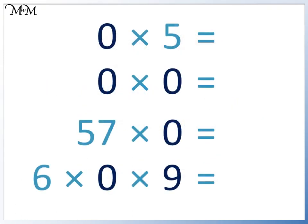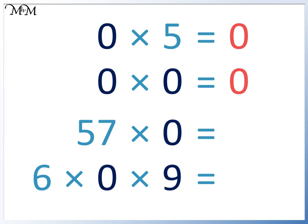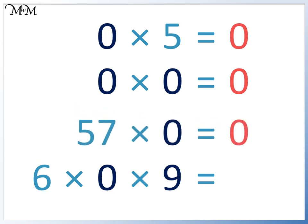We will now look at these examples. Even 0 times 0 equals 0, because we are multiplying by 0, so we have no lots of nothing. It doesn't matter what the other number is — 57 times 0 equals 0. Even if we have several numbers multiplied together, if one number is 0, our answer is still 0. 6 times 0 times 9 equals 0. As long as we are multiplying by 0, our answer is always 0.